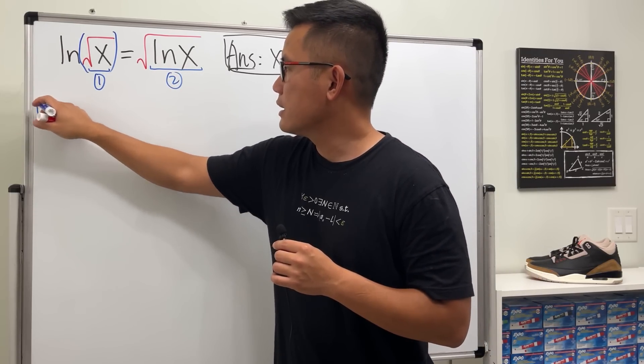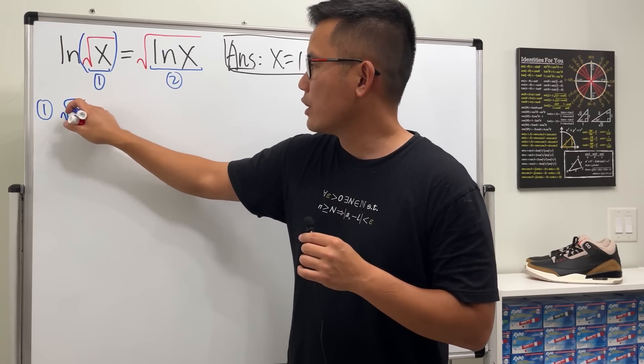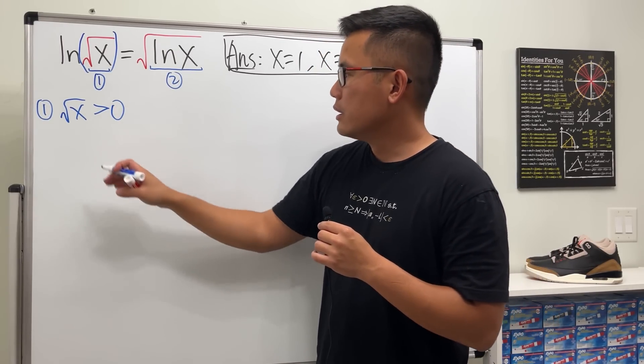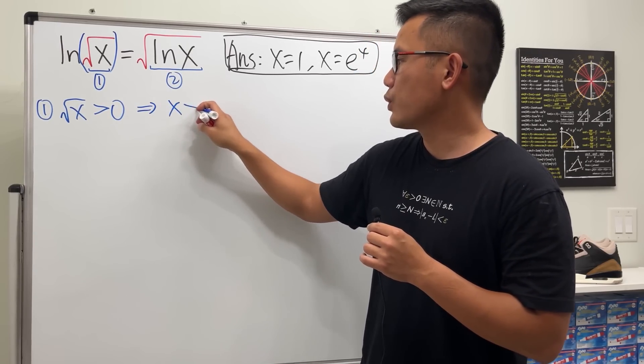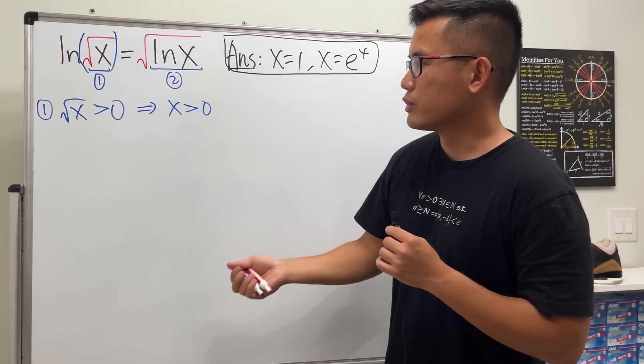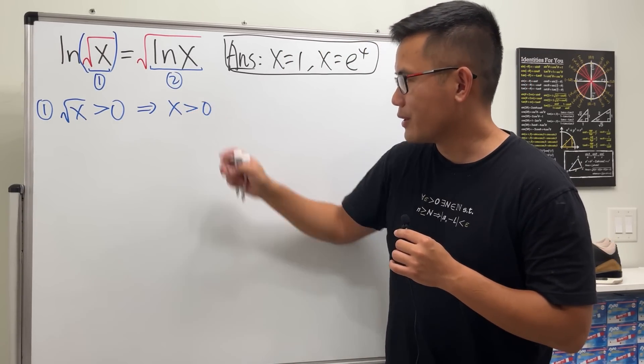For the first part, because we have square root of x instead of the ln, we have to make sure that square root of x has to be greater than 0. This means you can just square both sides, so x has to be greater than 0. And you can maintain the same inequality, because squaring both sides, when this is positive already, you maintain the greater than symbol.